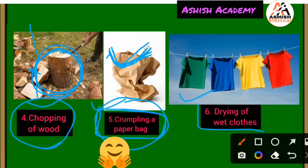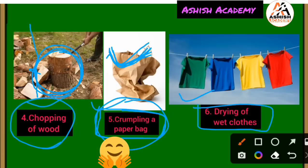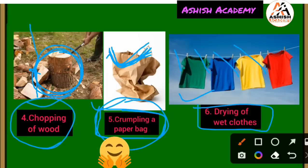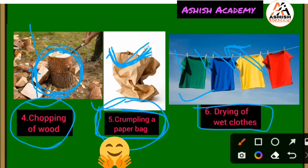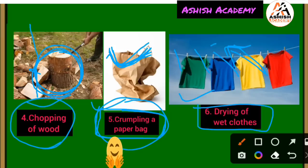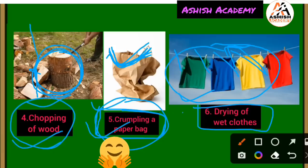Drying of wet clothes. The wet clothes are put out to dry. The water will evaporate from the clothes and through condensation the water cycle continues. So chopping of wood, crumpling of a paper bag, and drying of wet clothes are all physical changes.